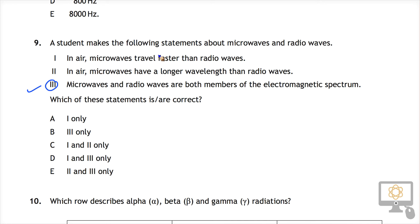And then we've got the first one: in air, microwaves travel faster than radio waves. Well, they're both light. They're both invisible forms of light. They're both parts of the electromagnetic spectrum. They travel at the speed of light. And so therefore, this is not correct.